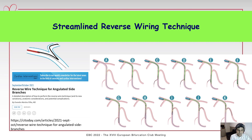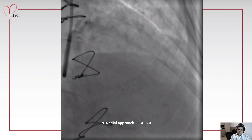Nowadays, we use a new iteration called the streamlined reverse wiring technique. I wrote about it in this article — you can refer to it. The main difference is that we form the hairpin shape inside the coronary tree; we don't need to advance it alongside the coronary.